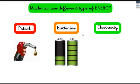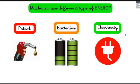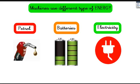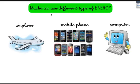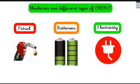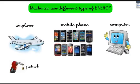And of course there's electricity. This computer uses electricity, and lots of appliances at home — like the washing machine, the dishwasher, and the hair dryer — they all use electricity. Machines use different types of energy. What about the airplane — petrol, battery, or electricity? Yes, of course: petrol.